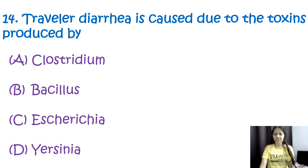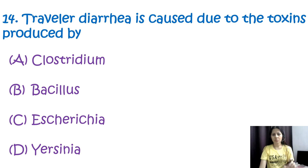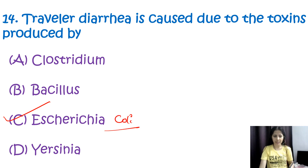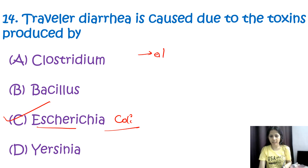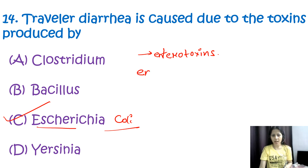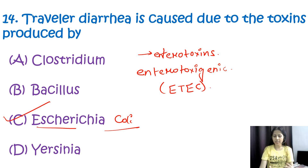Question number fourteen: traveler's diarrhea is caused due to toxins produced by — options are Clostridium, Bacillus, Escherichia coli, or Yersinia. Traveler's diarrhea is caused by toxins produced by E. coli, option C. These E. coli strains produce enterotoxins; more specifically they are enterotoxigenic E. coli (ETEC), which are a common cause of traveler's disease. These bacteria can contaminate food or water in areas with poor sanitation. The correct option is C, E. coli.